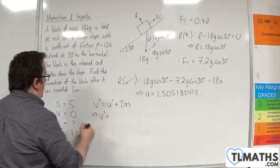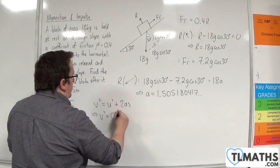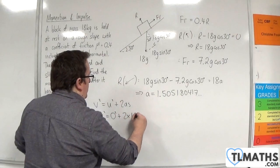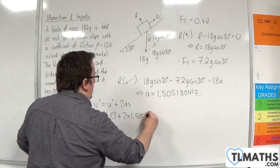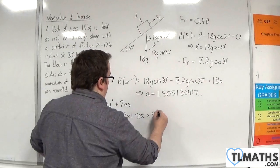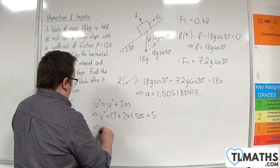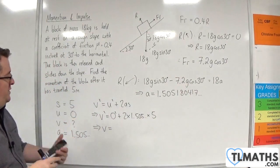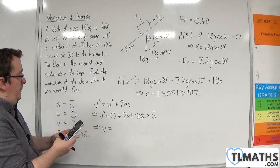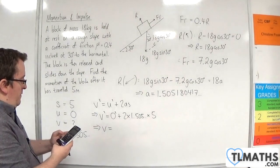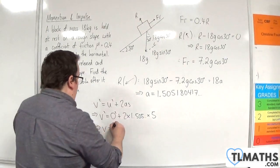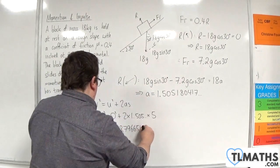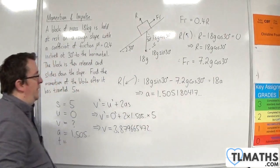So v squared is 0 squared plus 2 times 1.505, etc., times by s, which is 5. So I need to multiply those three things together and then square root it. So times by 2 times by 5, square root the answer. And we get 3.879665472 metres per second.